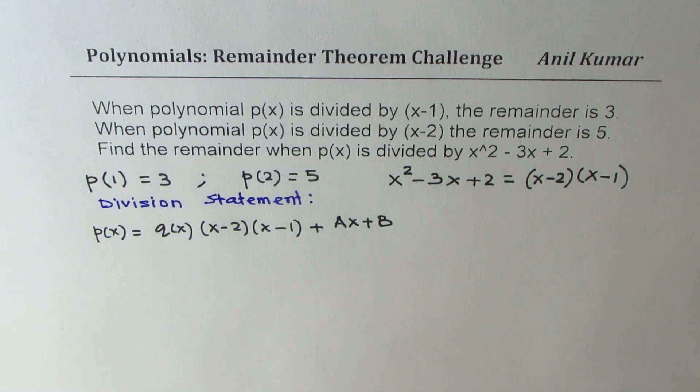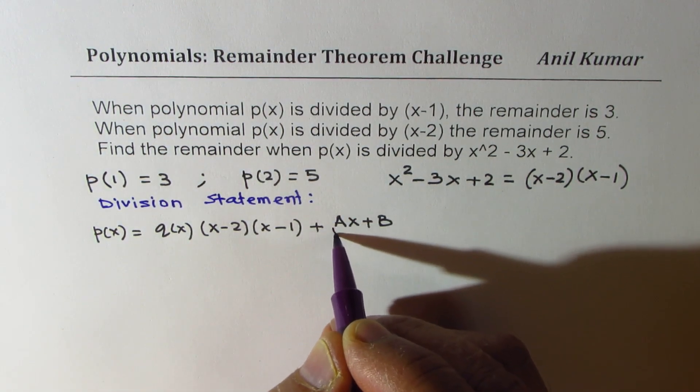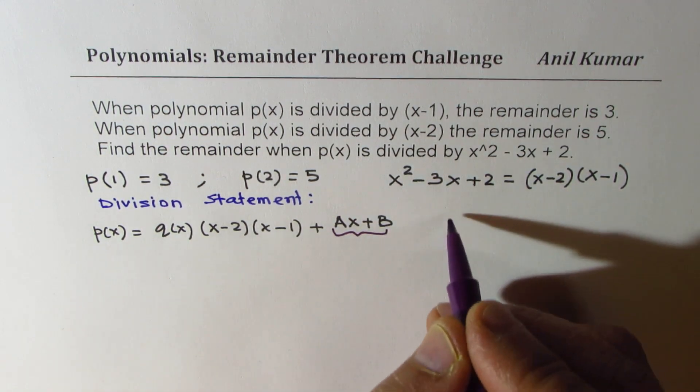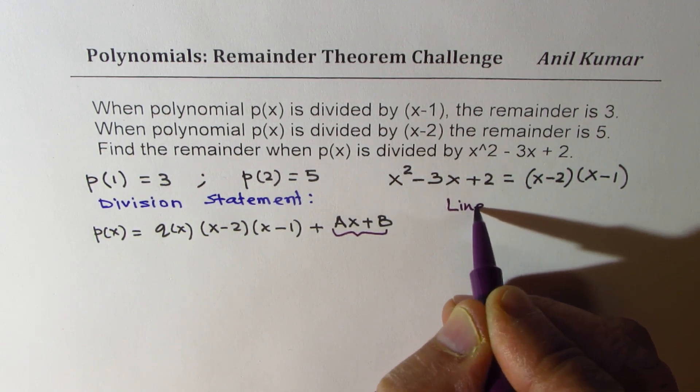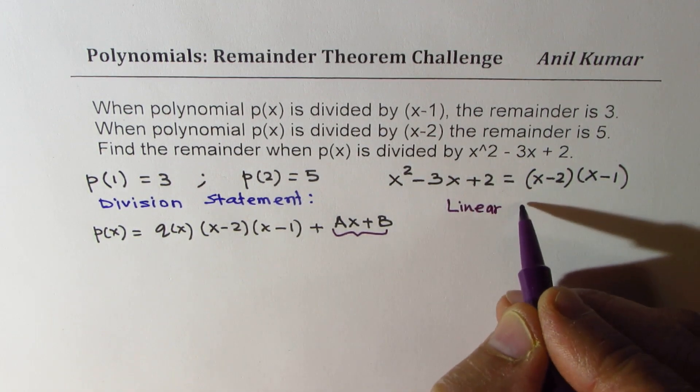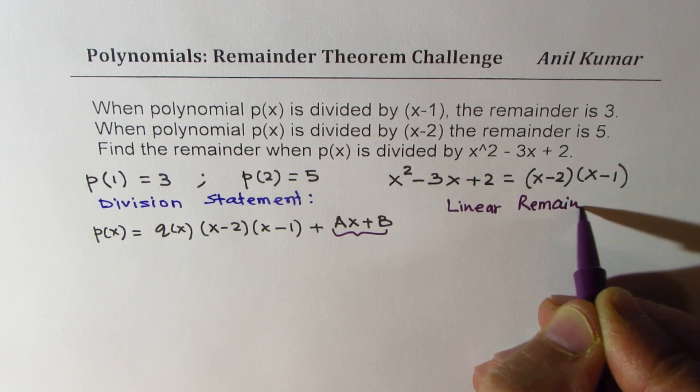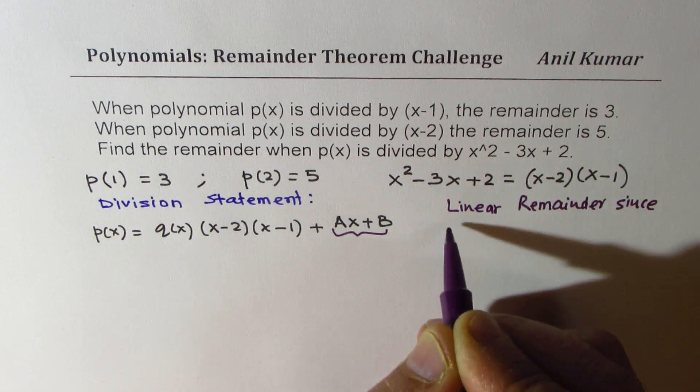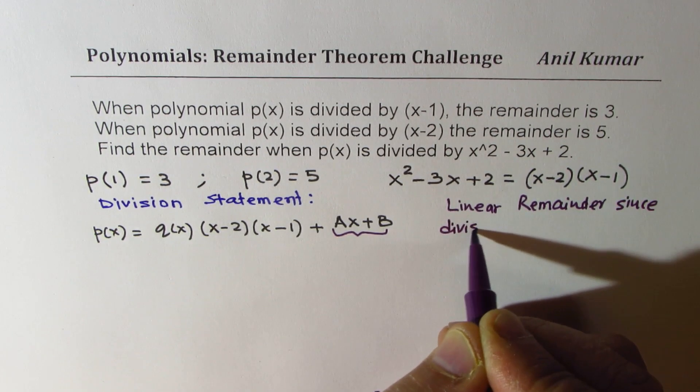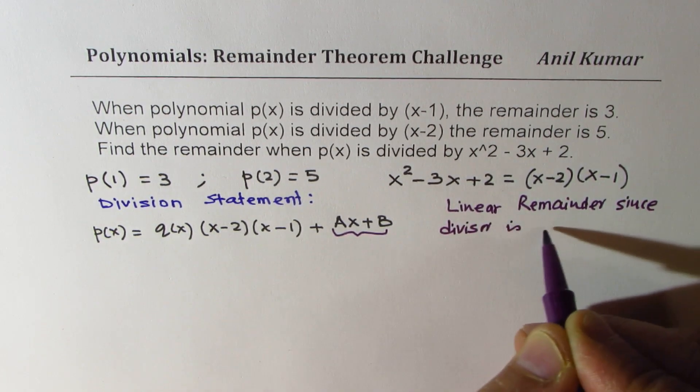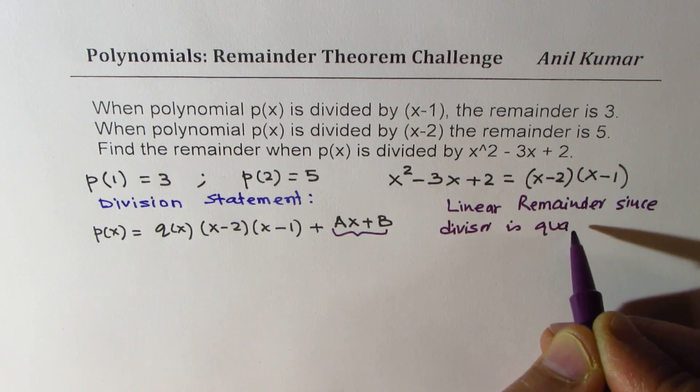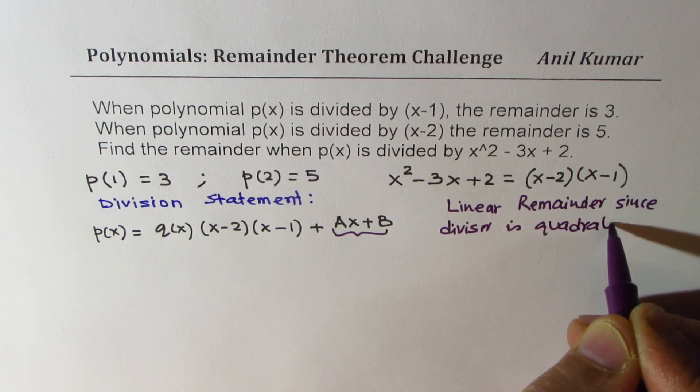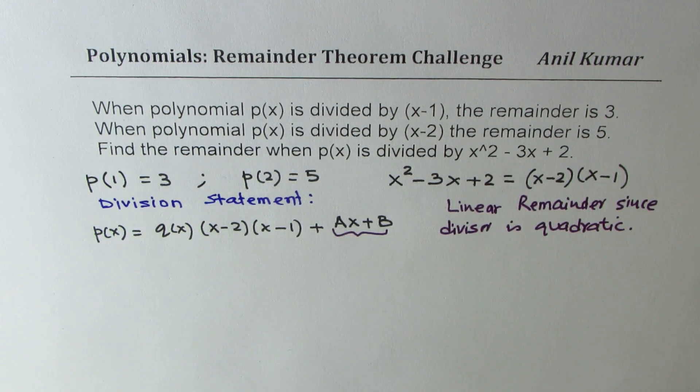The point to be noted here is that this particular remainder is linear remainder since the divisor is quadratic. That is important to note. Now we need to find Ax + B. Basically we need to find the value of A and B.